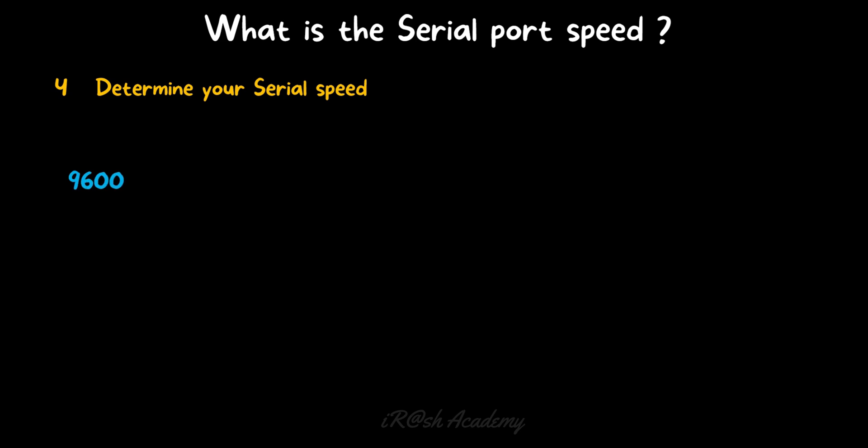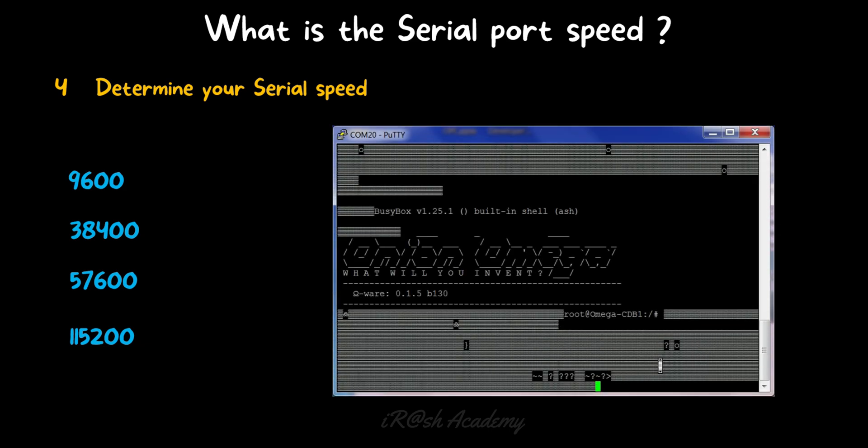Before you access the console connection of a network device, you need to consider one thing: the serial port speed. The serial port speed means the speed of the data going and coming through the serial interface — it has to match the device-side speed. Otherwise there will be a lot of disturbance and noise in your console window. The commonly used serial speeds are 9600, 38400, 57600, and 115200. You might have seen a console window with some kind of disturbance and noise — this happened because of a mismatch in the serial speed.